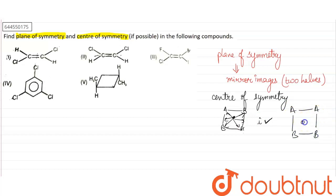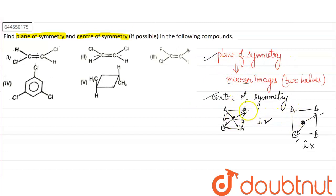For a compound where if we take the center and go one side A is present, but the other side B is present, and A does not equal B, then even if one condition is not fulfilled, center of symmetry is not present. So there are two rules: plane of symmetry — we check mirror images; and center of symmetry — we check opposite groups. Let's get started with option one.